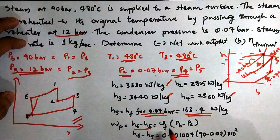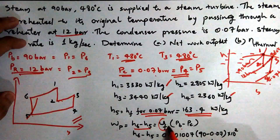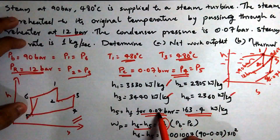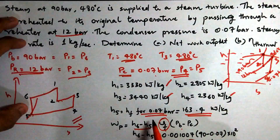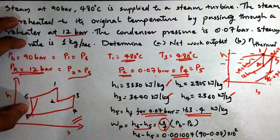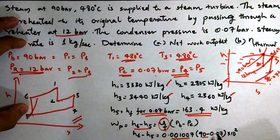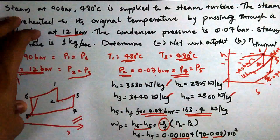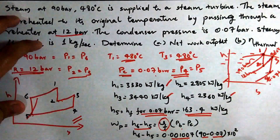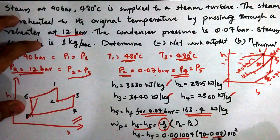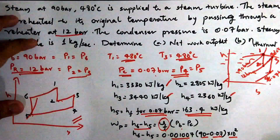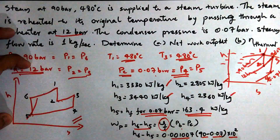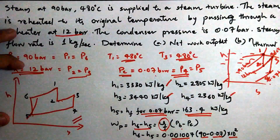The pump work is calculated as: WP equals H6 minus H5, which equals VF multiplied by (PB minus PC), where VF is the specific volume at point 5 at 0.07 bar from the steam table. The boiler pressure is 90 bar and the condenser pressure is 0.07 bar. We substitute the values in kPa — noting that 1 bar equals 100 kPa — to find WP. Then H6 equals H5 plus WP.